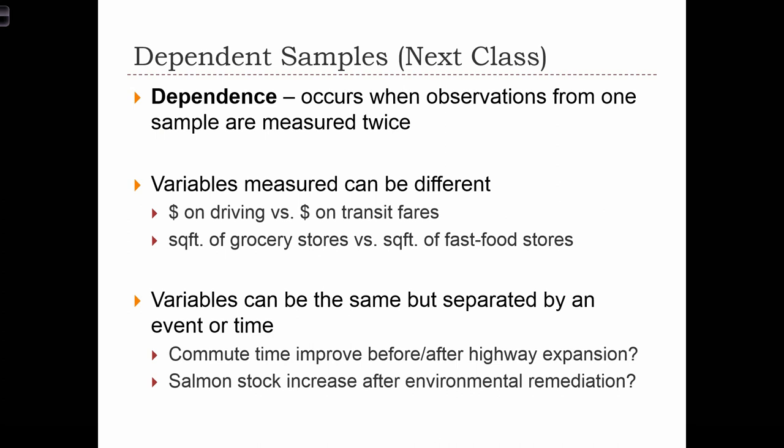Next class, we're going to go over dependent samples. Dependence occurs when observations from one sample are measured twice. For example, we can look at households and measure two variables: the amount spent on driving and the amount spent on transit. We can compare these two variables for the same observations to see if there's a difference.